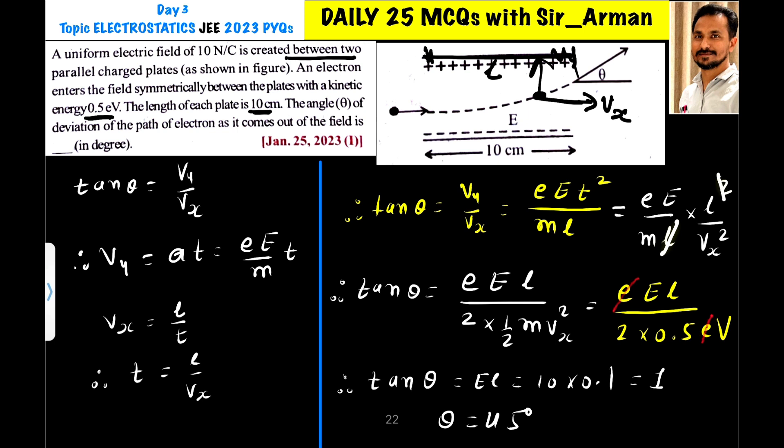So here you can see this l will get cancelled. So here it is mvx squared. But we know that half mvx squared is kinetic energy. So what I have done I have multiplied and divided this equation by 2. So half mvx squared here and 2 as it is. So it is eEl by 2 and half mvx squared is the kinetic energy and the kinetic energy is given 0.5 eV. So it is 0.5 eV.